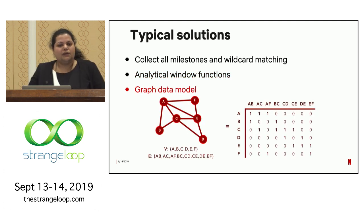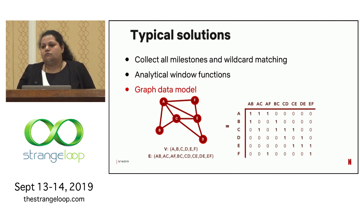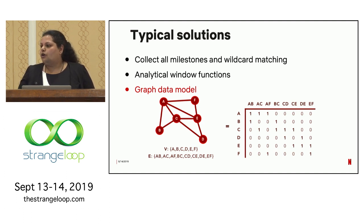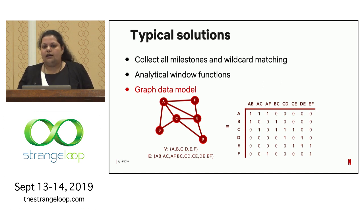Option three — and engineers might relate to this more — is organizing your data in a graph data model, with vertices representing the milestones we want to track and edges between milestones representing the paths. This is a good approach, but you'd have to overload the adjacency matrix with a lot of additional information to track loops, back-and-forth, directions, and so on. It's probably better suited for engineers, and we would additionally have to invest in frameworks or tools optimized for graph data models that also play well with our existing ecosystem — plus the overhead of learning something new.